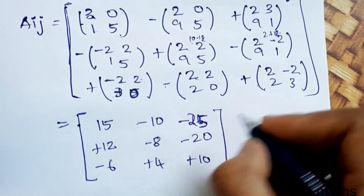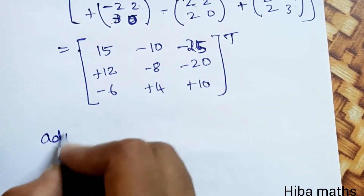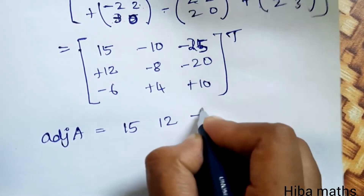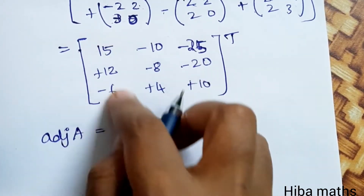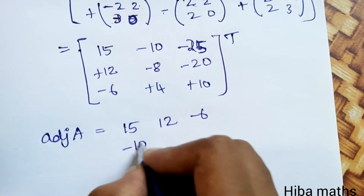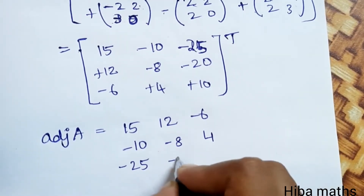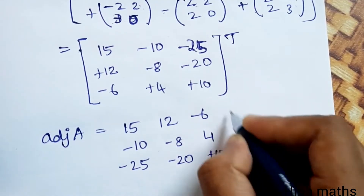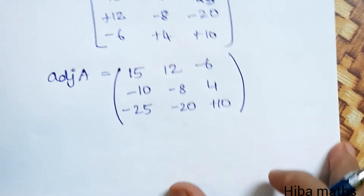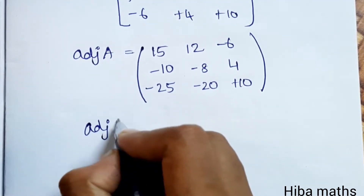This is the matrix of cofactors Aᵢⱼ. Taking the transpose gives us adjoint of A. Adjoint of A is equal to [[15, 12, -6], [-10, -8, 4], [-25, -20, 10]].